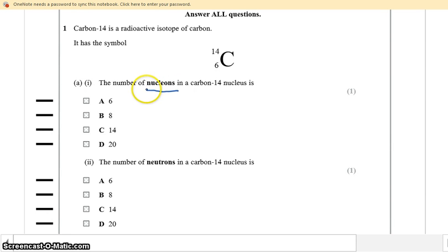The number of nucleons is the number of protons plus the number of neutrons, also known as the mass number. The number of nucleons is 14. To find the number of neutrons, we take the nucleon number or mass number and subtract the proton number: 14 minus 6 is 8.